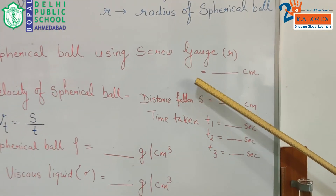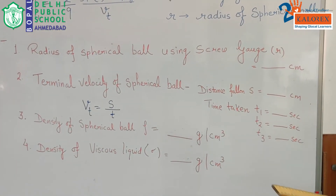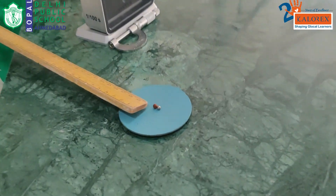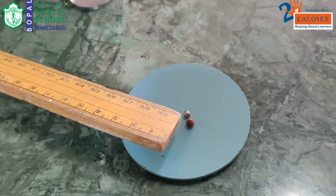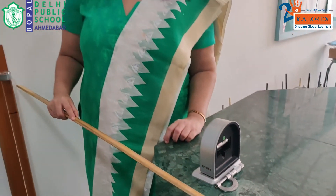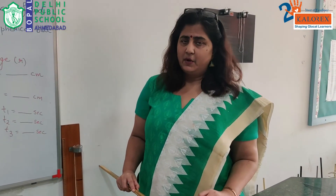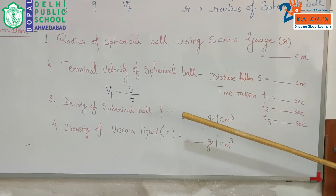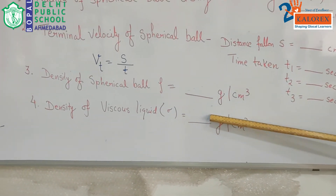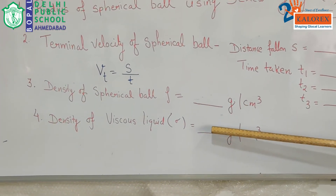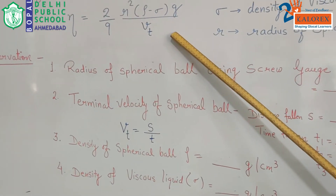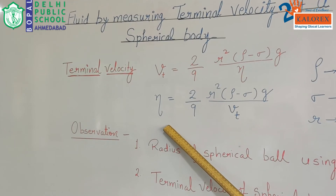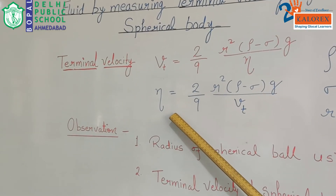I can repeat this experiment again using spheres of different radii. As you can see, we have another sphere of a smaller radius and one more which is very very small. So after finding the terminal velocity, and with the known values of the density of steel and glycerine, by substituting in the formula we can calculate the coefficient of viscosity of glycerine.